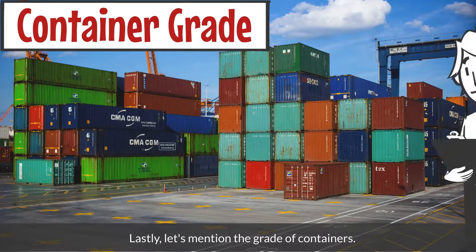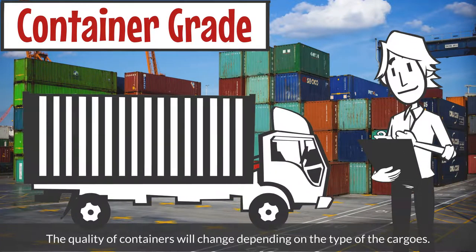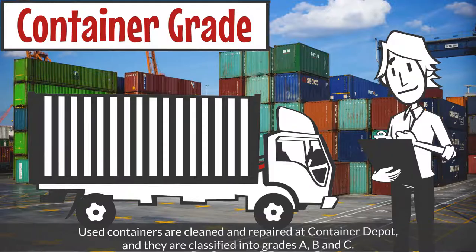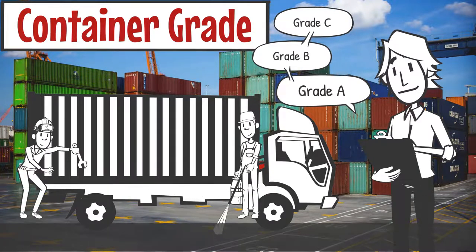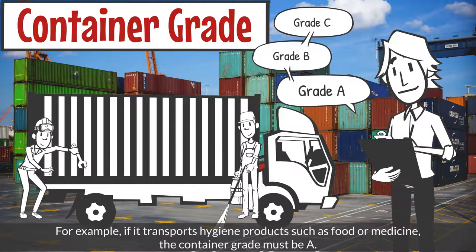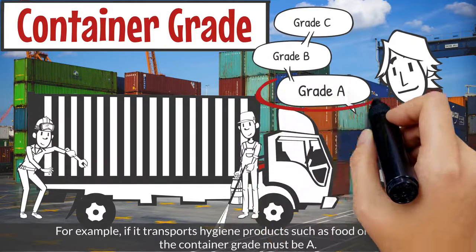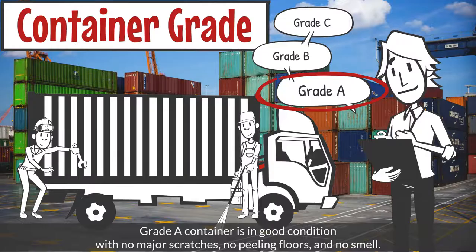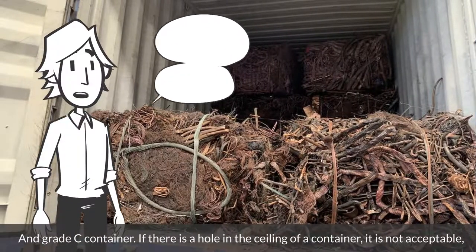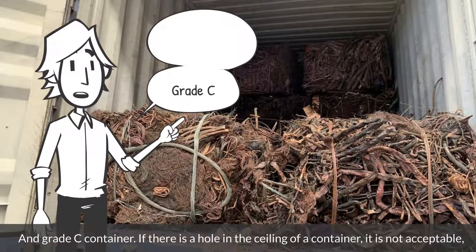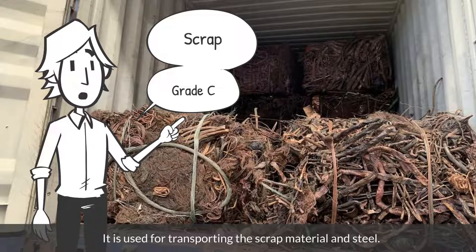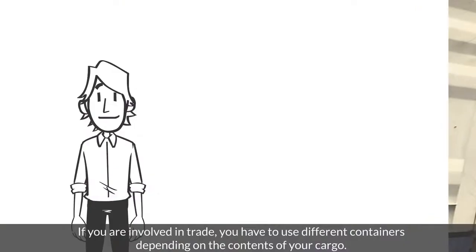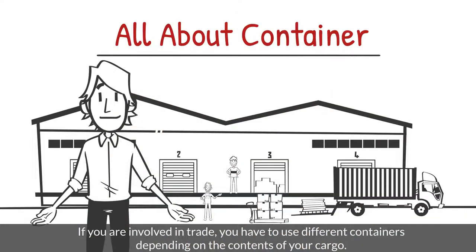Lastly, let's mention the grade of containers. The quality of containers will change depending on the type of cargo. Used containers are cleaned and repaired at a container depot and classified into grades A, B, and C. For example, if transporting hygiene products such as food or medicine, the container grade must be A. Grade A containers are in good condition with no major scratches, no peeling floors, and no smell. Grade C containers are used on the assumption that they have damages to some extent — if there is a hole in the ceiling, it is not acceptable, but they are used for transporting scrap material and steel.